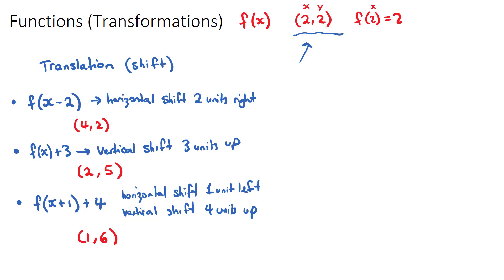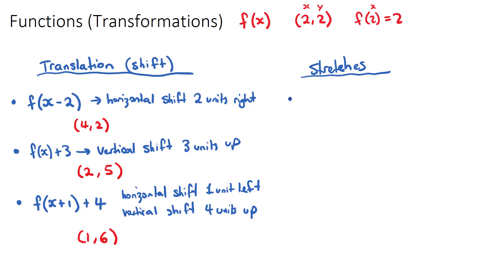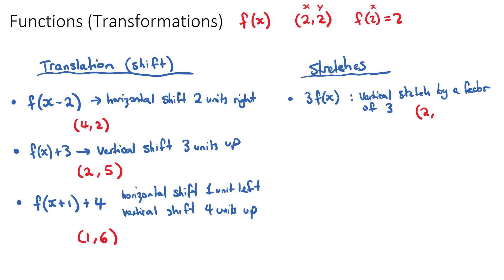The next topic is stretches. A stretch makes the function skinnier or wider — there's a vertical stretch and a horizontal stretch. If we have 3f(x), we're multiplying every y value by 3, so this is a vertical stretch. Applying this to our original coordinate (2, 2): x doesn't change, but the y coordinate is multiplied by 3, giving (2, 6), since 2 × 3 = 6.